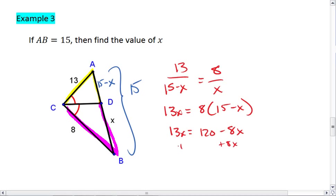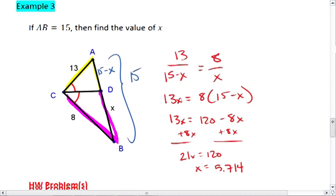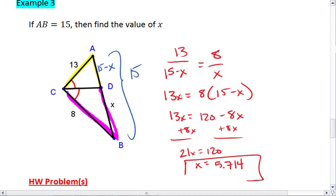Add the 8X to both sides. 21X equals 120. X is going to equal 120 divided by 21, which is 5.714. And that's our answer.